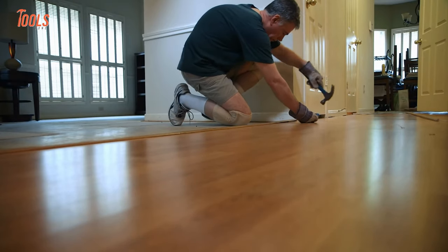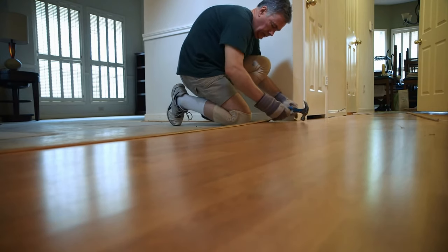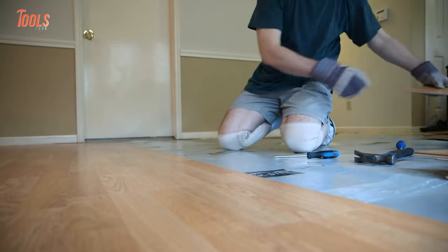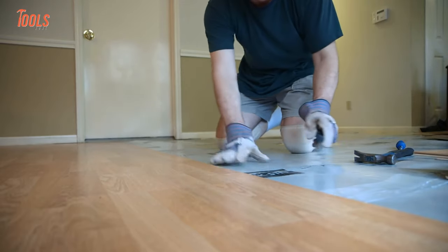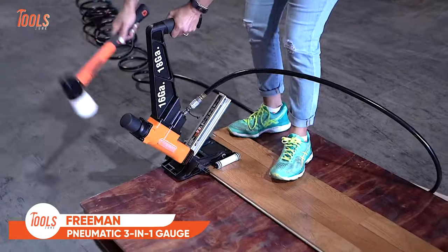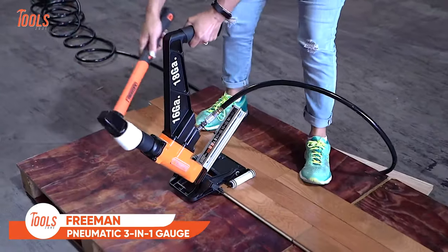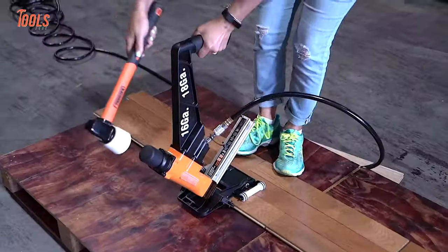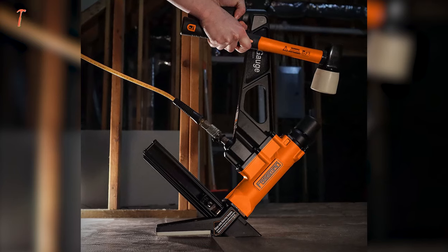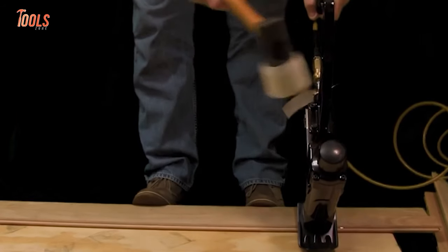It's very common for construction applications to mess you up with difficulties. And if you're involved with flooring tasks, things might get more complicated. This is why the Freeman PFL618BR comes in handy and gets all the job done without any pain. It has a multi-purpose design that lets you tackle both nailing and stapling.